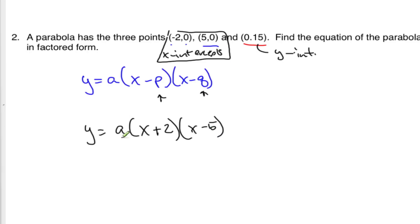And so now I have to figure out how to get the a value. How am I going to figure out a? So this is just a simple substitution. We can put our x in as 0 and our y in as 15. 15 equals a, 0 plus 2, 0 minus 5.